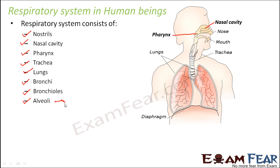The alveoli is the place where actual exchange of gases takes place. Oxygen taken in is sent to the blood, and carbon dioxide — a byproduct of cellular respiration — comes from the blood to the alveoli. Once carbon dioxide reaches the alveoli it follows the same path back out of the body through the nostrils.